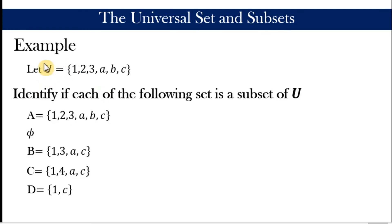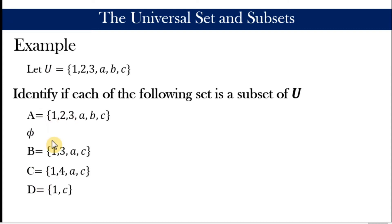Let us provide some examples. Let our universal set be the set containing six elements: the numbers one, two, three and the letters A, B, C. We will identify whether each of the following sets is a subset of our universal set, and if so, whether it is an improper or proper subset. You may pause to answer before continuing.